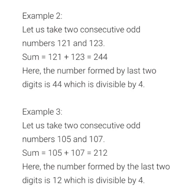Now we will do one more example. Let us take two more consecutive odd numbers — here we have taken the three-digit numbers 121 and 123. Children, 121 plus 123 is 244. The last two digits of this number are 44, which is divisible by 4. That means the sum of consecutive odd numbers 121 plus 123 equals 244, and 244 is divisible by 4.